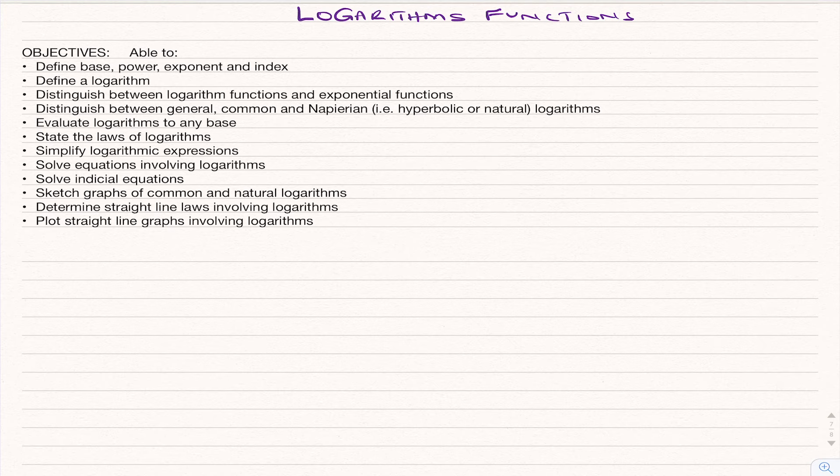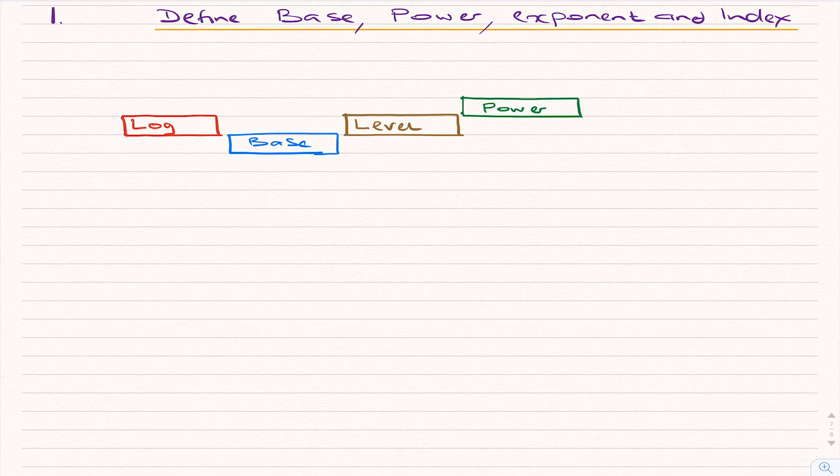Five: evaluate logarithms to any base. Six: state the laws of logarithms. Seven: simplify logarithm expressions. Eight: solve equations involving logarithms. Nine: solve indicial equations. Ten: sketch graphs of common and natural logarithms. Eleven: determine straight line laws involving logarithms and plot straight line graphs. So the first one we'll look at is the introduction to logarithms by defining the base, power, exponent, and index.